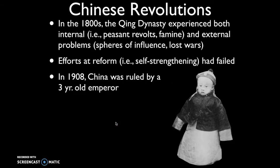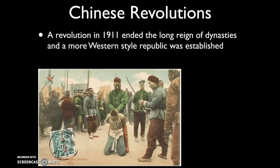In 1908, to compound problems, China was ruled by a three-year-old emperor. There was really a regent in power making decisions, but as you can imagine, a three-year-old running all of China — not the best idea. So in 1911, another rebellion breaks out in China. This is the second in just one decade, because there was a previous rebellion, the Boxer Rebellion, in 1898. And this ends the long reign of dynasties — this 3,000-year-old dynasty system.